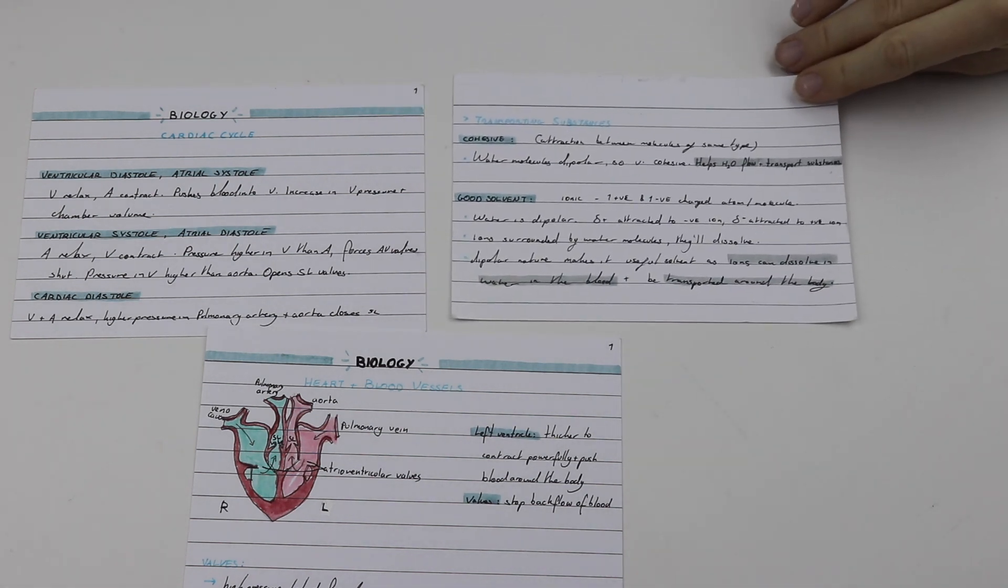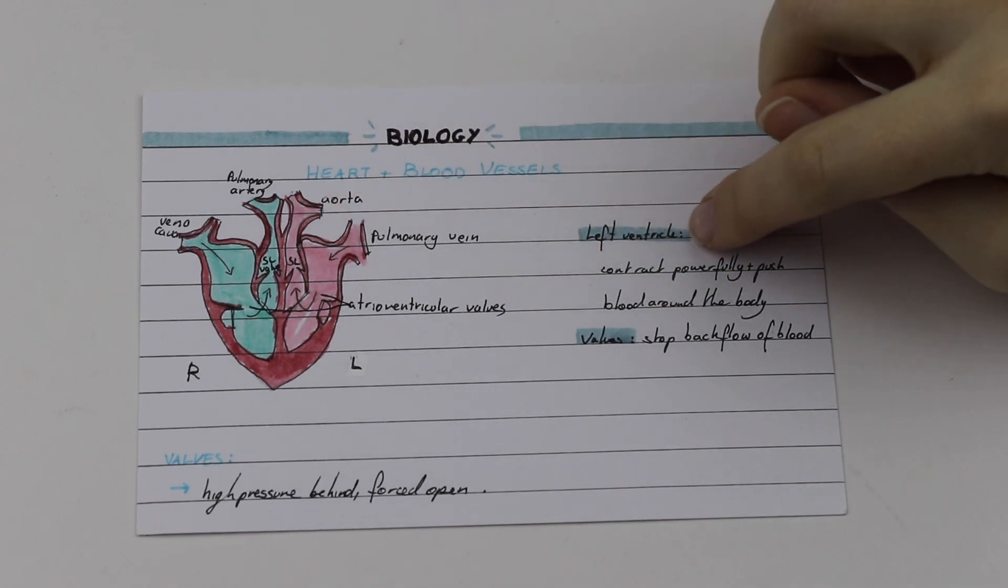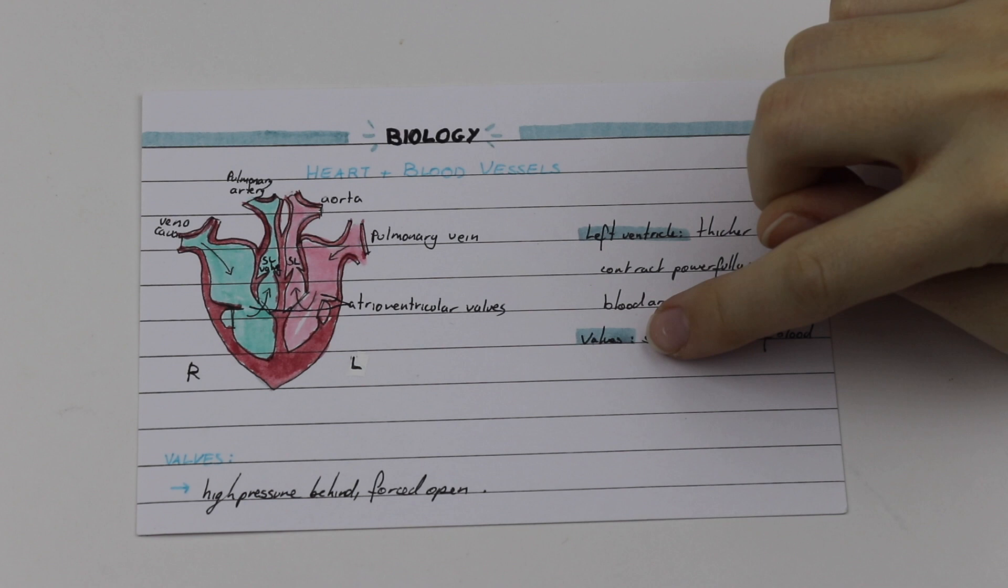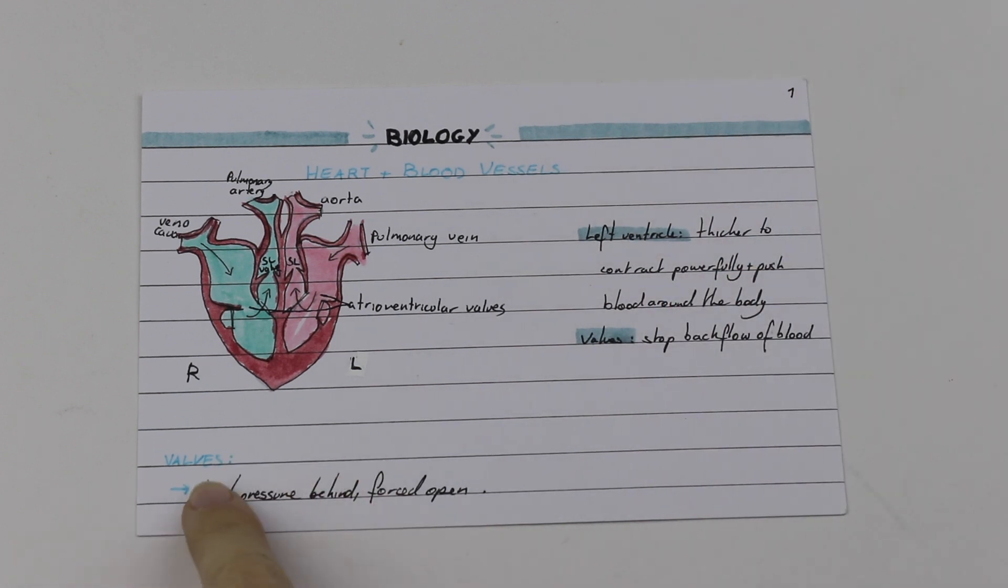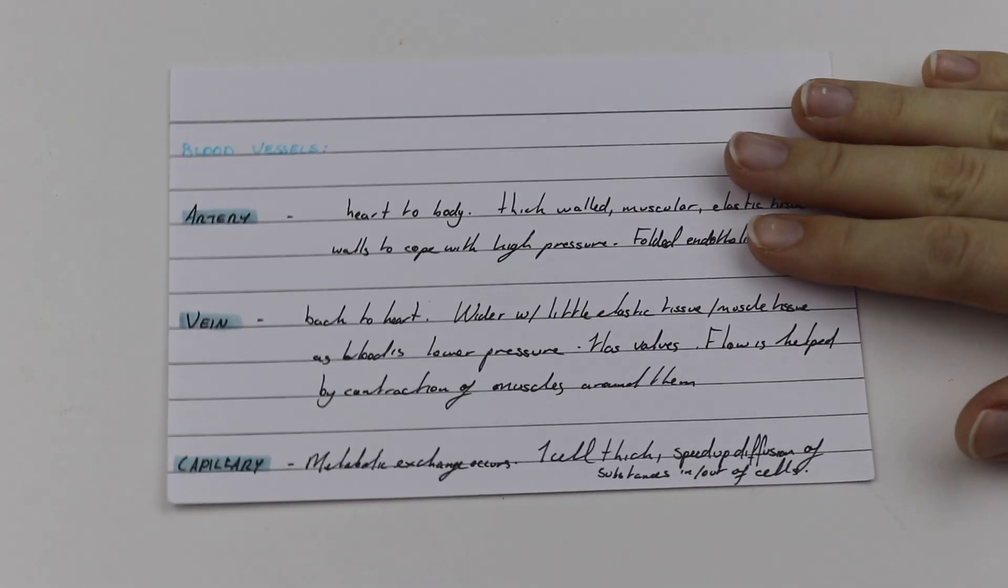So here I'm just showing you some different types of flashcards from biology. You can see there are some with lots of diagrams and others that are more information-packed. I have the same header and I always write the actual topic at the top in capital letters. I usually highlight these subheadings as well and write them in capitals so that they're really easy to see and everything is all sectioned off.